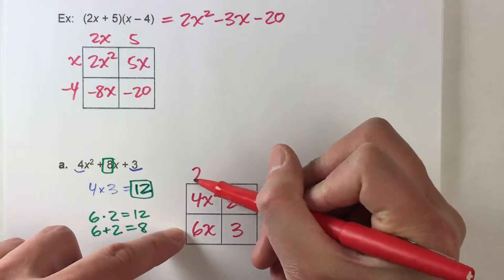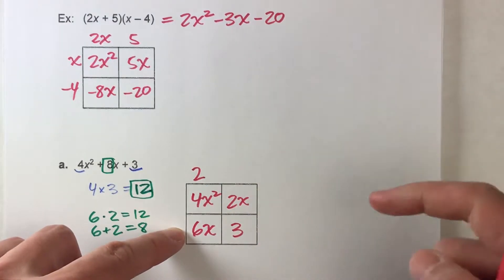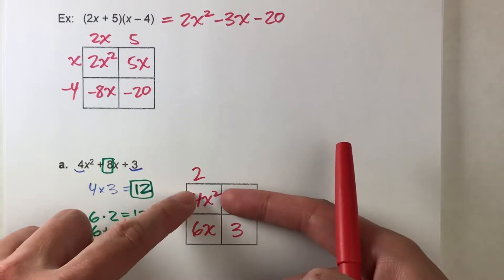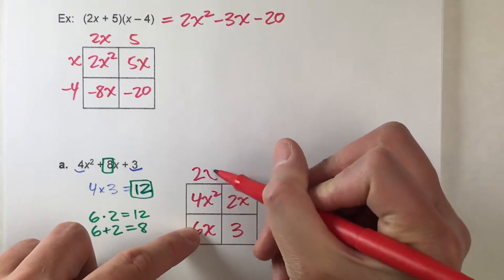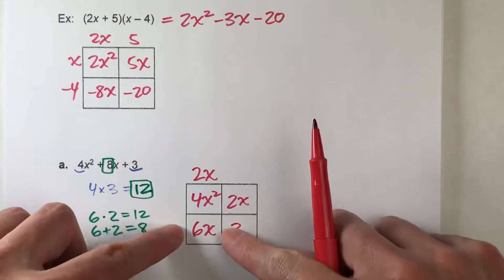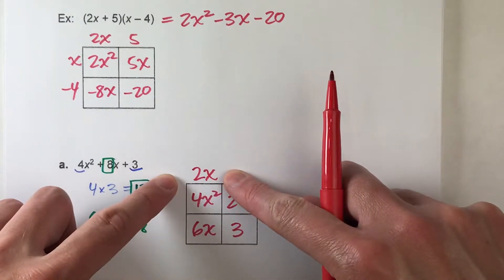Well, 2 goes into 4 and 6. And what's the biggest number that goes into x squared and x? Well, x goes into both of them. So our greatest common factor here is 2x.